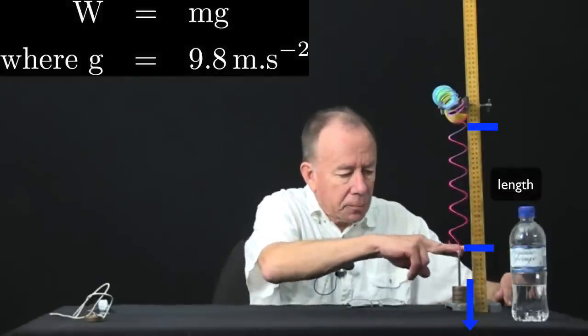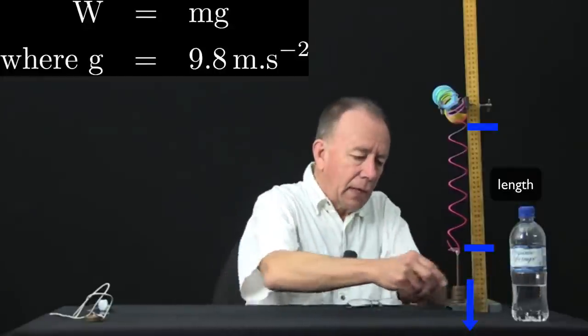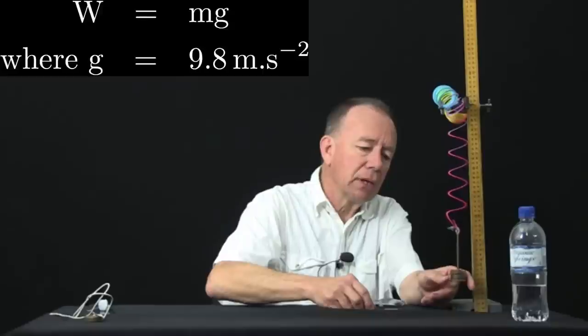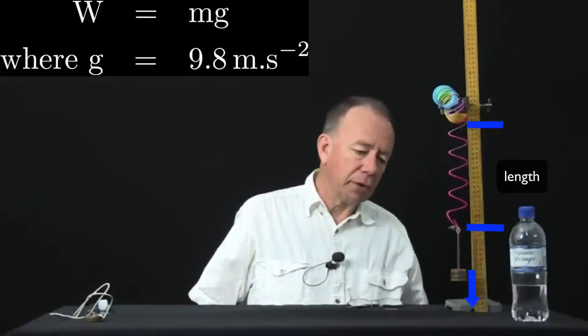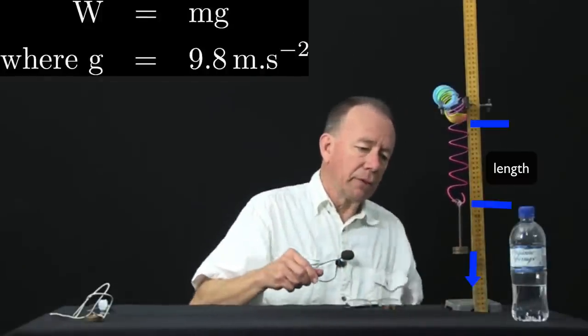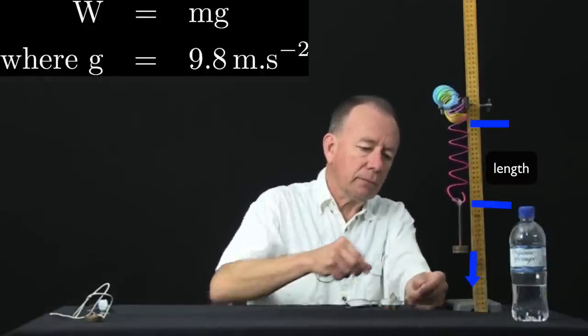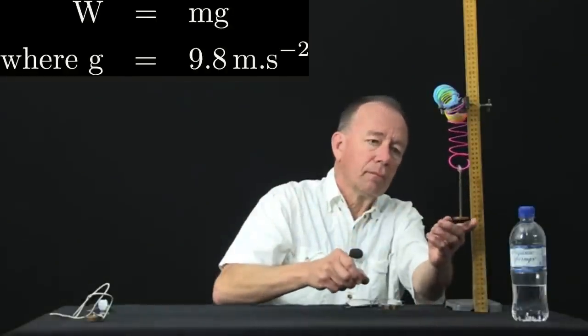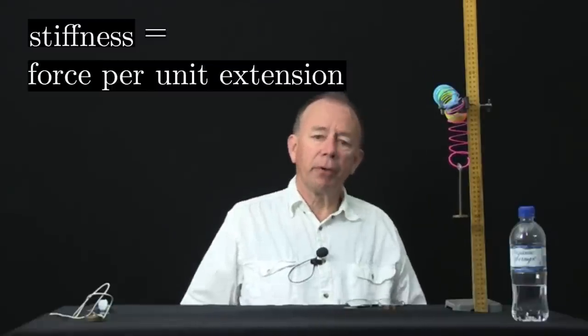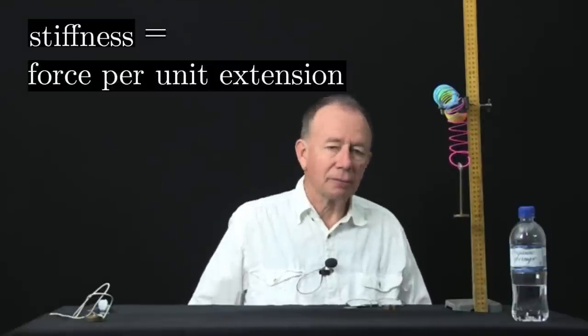Let's look at the extension of the spring against the metre rule. And now I'll reduce the force. We've got 150 grams, about 1.5 newtons, 100 grams, and 50 grams. So from those three measurements, we can calculate the stiffness of the spring, the force per unit extension of the spring.